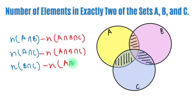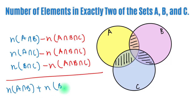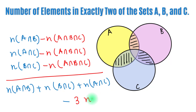By adding these quantities, we get: number of elements in A∩B plus number of elements in B∩C plus number of elements in A∩C, minus three times n(A∩B∩C). So this is how we find the number of elements in exactly two of the sets A, B, and C.